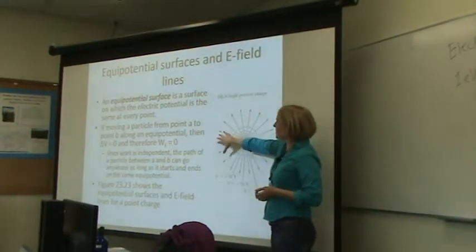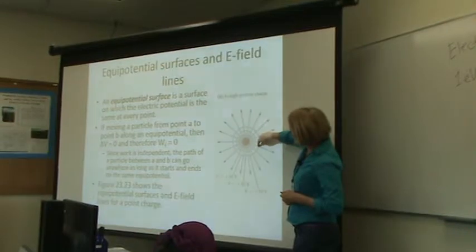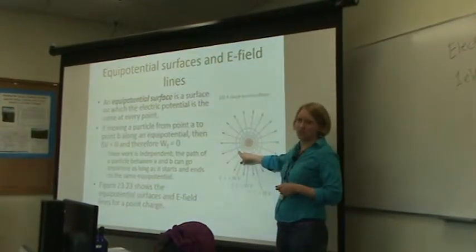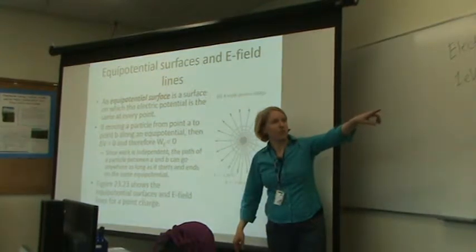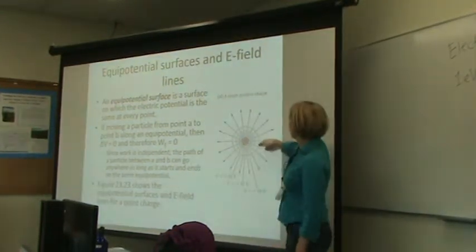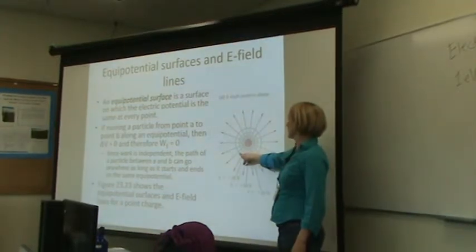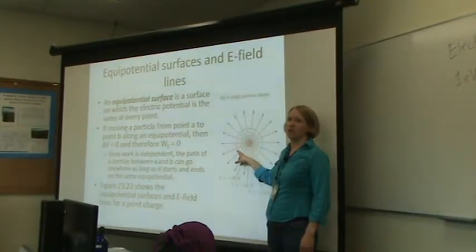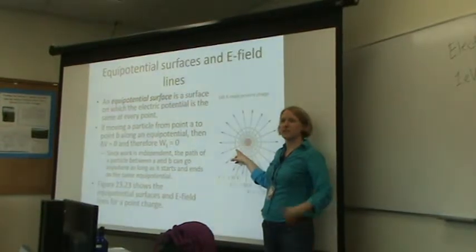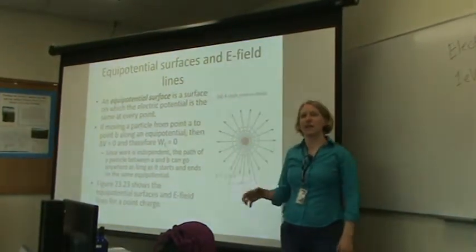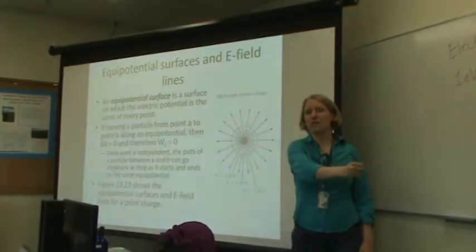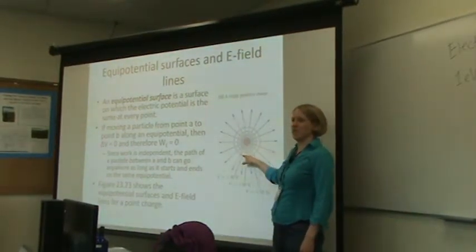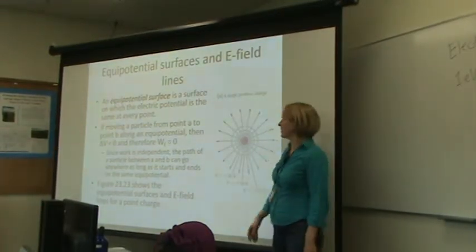A couple of properties of an equipotential surface: if we were to take a charge and move it along an equipotential surface, your change in electric potential would be zero. From our equation, if the change in potential is zero, then it would take no work to move along an equipotential surface. Work is defined by whether you're moving with the electric field or away from it.